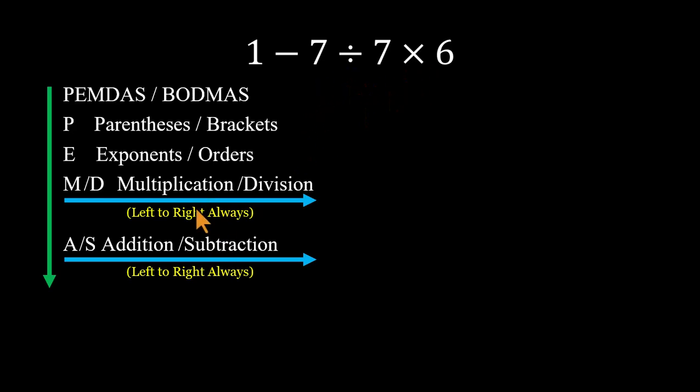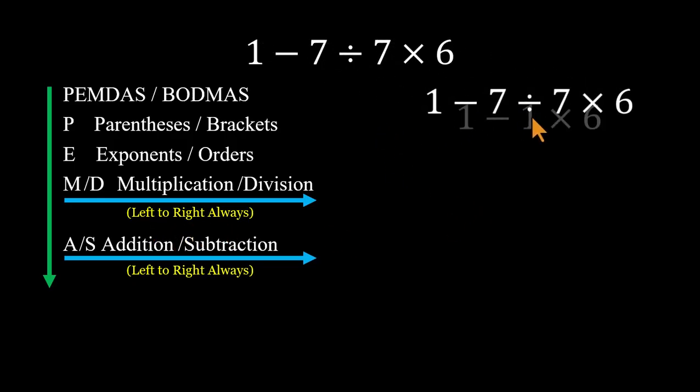we simply move left to right among them. So start with division. 7 divided by 7 equals 1. Now we have 1 minus 1 times 6. Next comes multiplication. 1 times 6 equals 6.